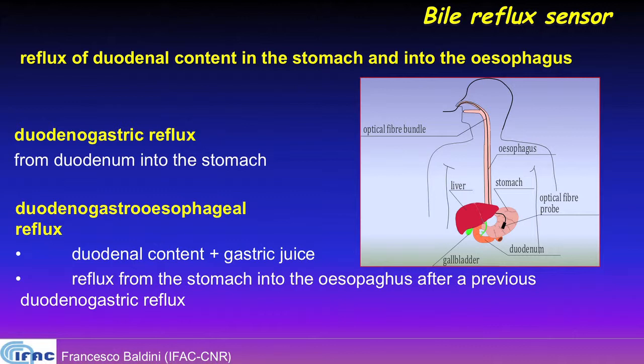Bile is generally secreted by the liver and can come back to the stomach or to the esophagus, creating damage to the mucosa of the stomach or the esophagus. So it's very important to have continuous monitoring. And we use the optical approach exploiting as a marker bilirubin, which is one of the pigments contained in the bile.